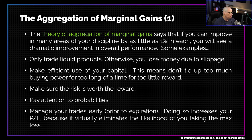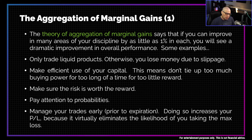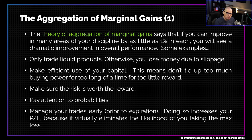Another area you can improve in is making efficient use of your capital. That means don't tie up too much of your buying power for too long a time for too little reward. New options traders fall into this trap regularly — they take trades that use up way too much of their buying power, and then the trade goes against them. They don't want to accept the loss, so they stay in the trade, keep rolling, hold on — maybe in the trade for six weeks, six months, even a year — with all that buying power tied up the whole time. Eventually the trade works in their favor and they get out for a scratch or very small profit. That is not efficient use of your capital.